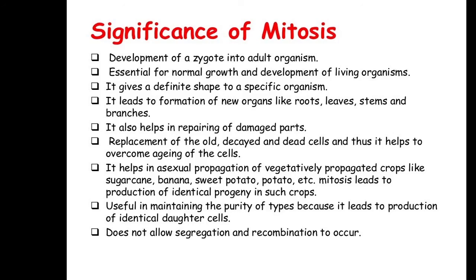Cells in the body that are worn out or defective undergo apoptosis — a process by which they are eliminated. When replacement cells are needed, that also happens because of mitosis and the cell cycle. Asexual reproduction and vegetative propagation of crops like sugarcane, banana, sweet potato, and potato also depend on mitosis — you take a part of the plant and place it in soil, and it grows into a new plant.